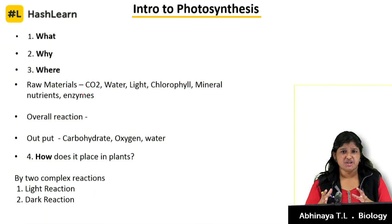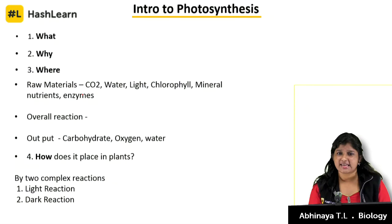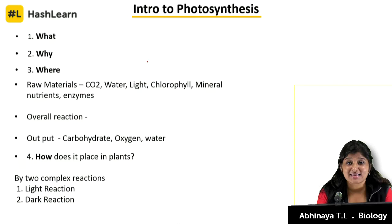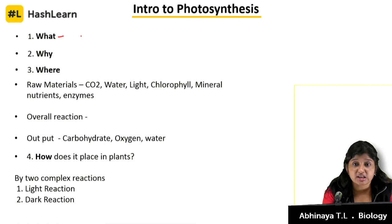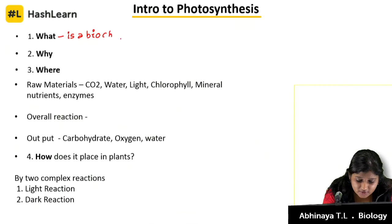You have to ask yourself how is this taking place, where is it taking place, what it is, and how is it taking place. For photosynthesis — which we have been studying since class 6 — let us give a decent definition. Photosynthesis is a biochemical process where carbon dioxide is reduced to carbohydrates.